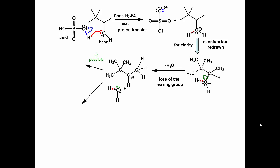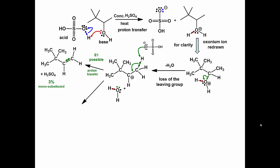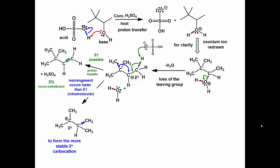An E1 product could be formed after this step. The proton transfer reaction would produce a monosubstituted alkene, but in this reaction it is only produced in about a 3% yield. The reason this is produced in such a small yield is that the more energetically favored carbocation rearrangement occurs very quickly, and the more stable tertiary carbocation is formed before any significant amounts of E1 product has a chance to form.